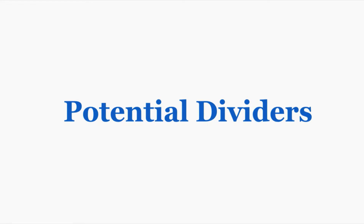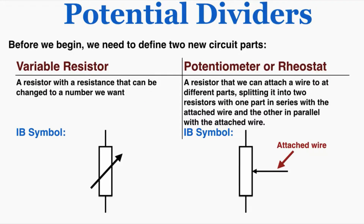This is a short video on potential dividers, but before we talk about potential dividers I just need to introduce two new symbols for two new parts of the circuit. The first symbol on the left means a variable resistor, which really just means a resistor with a resistance that can be changed to a number that we want. Basically we can control the resistance in that resistor and change it.